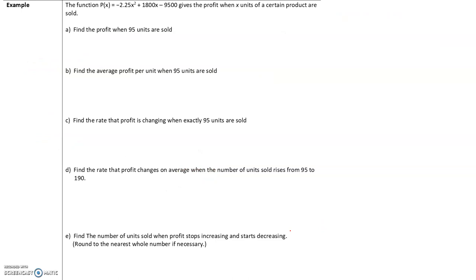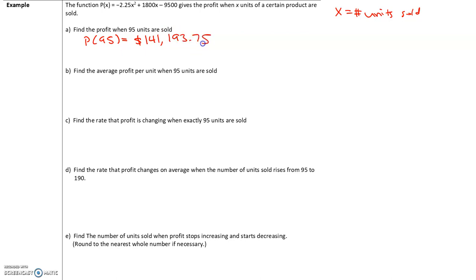Let's take a look at an example. The function p of x equals negative 2.25x squared plus 1800x minus 9500 gives profit when x units of a certain product are sold. x is equal to the number of units of the product that are sold. Part A: find the profit when 95 units are sold. You would put this function into Desmos or a calculator and find p of 95. The total profit when 95 units are sold is $141,193.75.